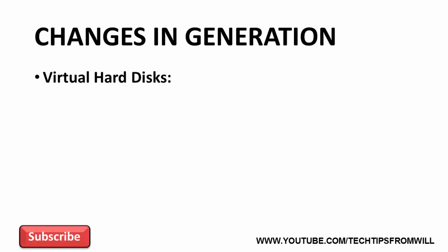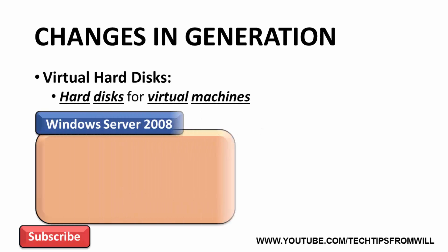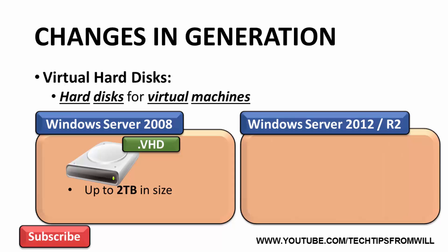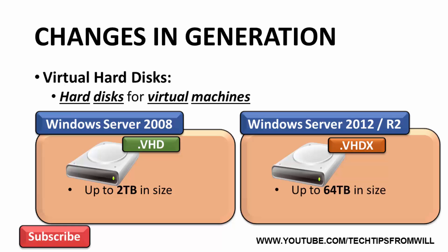This brings us to the next change: virtual hard disks. Virtual hard disks are essentially hard disks for virtual machines. When Hyper-V first debuted in Windows Server 2008, there was just one format of virtual hard disk available, called VHD. VHD virtual hard disks can be as large as 2TB. With Windows Server 2012 and Windows Server 2012 R2, Microsoft introduced a new format called VHDX. VHDX virtual hard disks can be as large as 64TB and, according to Microsoft, are less likely to become corrupted from power failures. Since VHDX is new to Windows Server 2012 and 2012 R2, it can't be used on Windows Server 2008 or 2008 R2 Hyper-V servers.